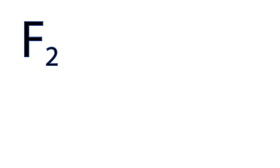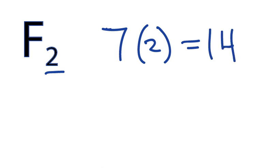And we'll start looking on the periodic table. Fluorine is in group 7, or sometimes called 17, and that means that it will have 7 valence electrons. But we have 2 Fluorine atoms, so we need to multiply that by 2, and that gives us a total of 14 valence electrons.